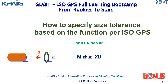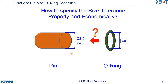Hello everyone, welcome to this bonus video on how to specify size tolerance based on function per ISO GPS. This bonus video is based on the course GD&T and ISO GPS for Learning. Here we have two parts: the first part is a pin, the second part is an o-ring. This o-ring should be assembled onto the pin without interference — that's the function. Next, we need to specify the tolerance.